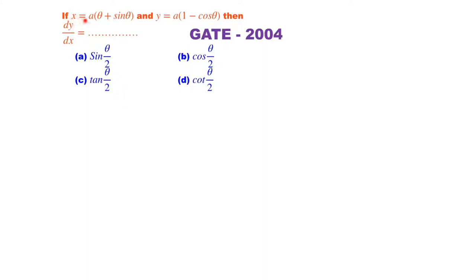Here x is given in terms of theta and y is also a function of theta. It is a GATE previous problem from 2004. Then how can we find the dy/dx value? So first of all write x as aθ plus a sin θ.